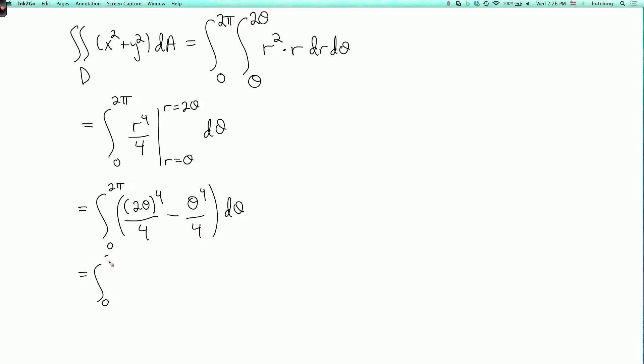So we can simplify this to 15 over 4 times theta to the 4 d theta. So now we have to integrate this over theta. And the integral of theta to the fourth is theta to the fifth over 5. So I have 3 fourths theta to the fifth evaluated at theta equals 2 pi and theta equals 0. So I just get 3 fourths times 2 pi to the fifth, which we can simplify to 24 pi to the fifth.